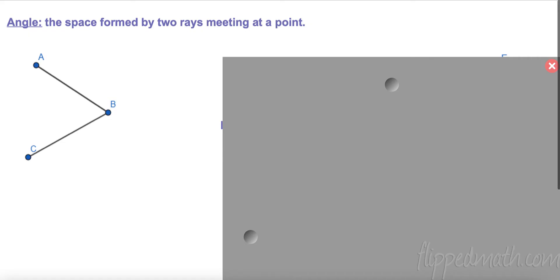Let's talk about angles. An angle is the space formed by two rays meeting at a point. Let's take a look at what this means. So we have these two things over here, these two sides, we have A and B and B and C. The angle is the space here between these two sides.